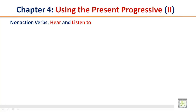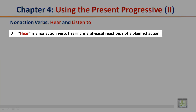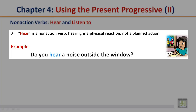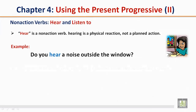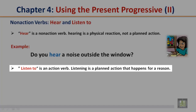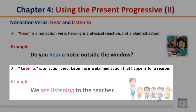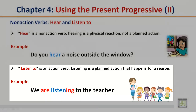Non-action verbs — hear and listen to. 'Hear' is a non-action verb; hearing is a physical reaction, not a planned action. Example: Do you hear a noise outside the window? 'Listen to' is an action verb; listening is a planned action that happens for a reason. Example: We are listening to the teacher.